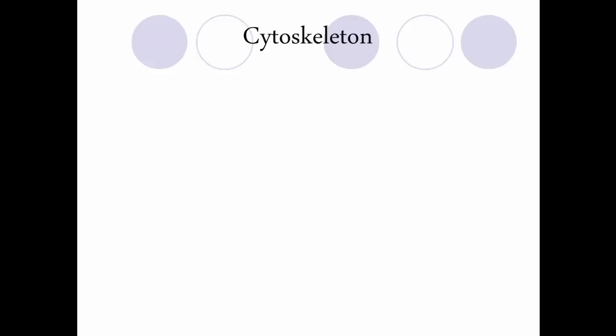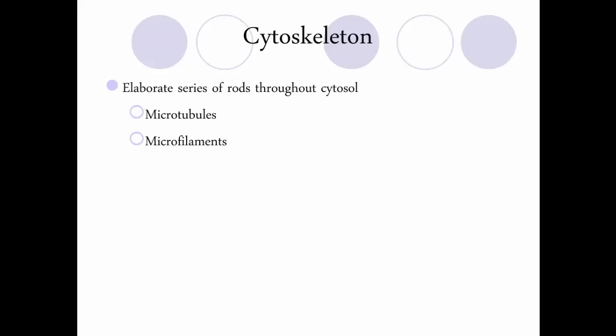The cytoskeleton is a non-membranous organelle — an elaborate series of rods and fibers that travel throughout the cytosol. It's made of microtubules, microfilaments, and intermediate filaments. Like your skeleton, the cytoskeleton provides structure to the cell so it does not collapse on itself. It also allows for transport of nutrients and vesicles, creating a kind of highway for vesicles to travel along so they get where they're going.